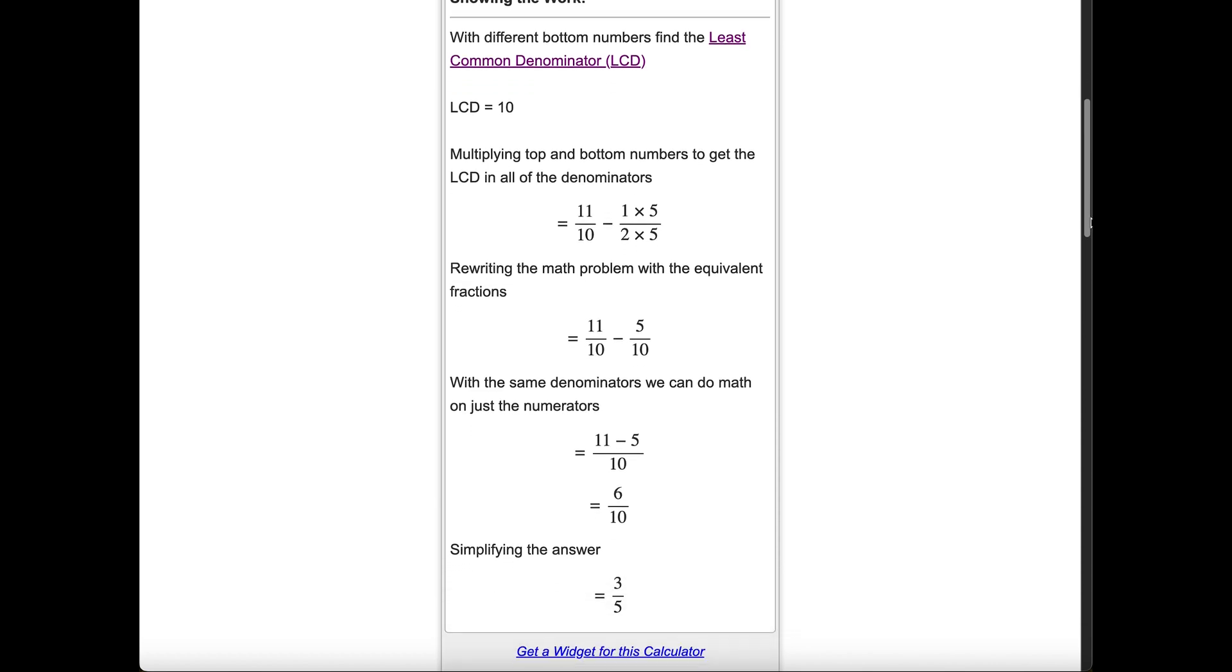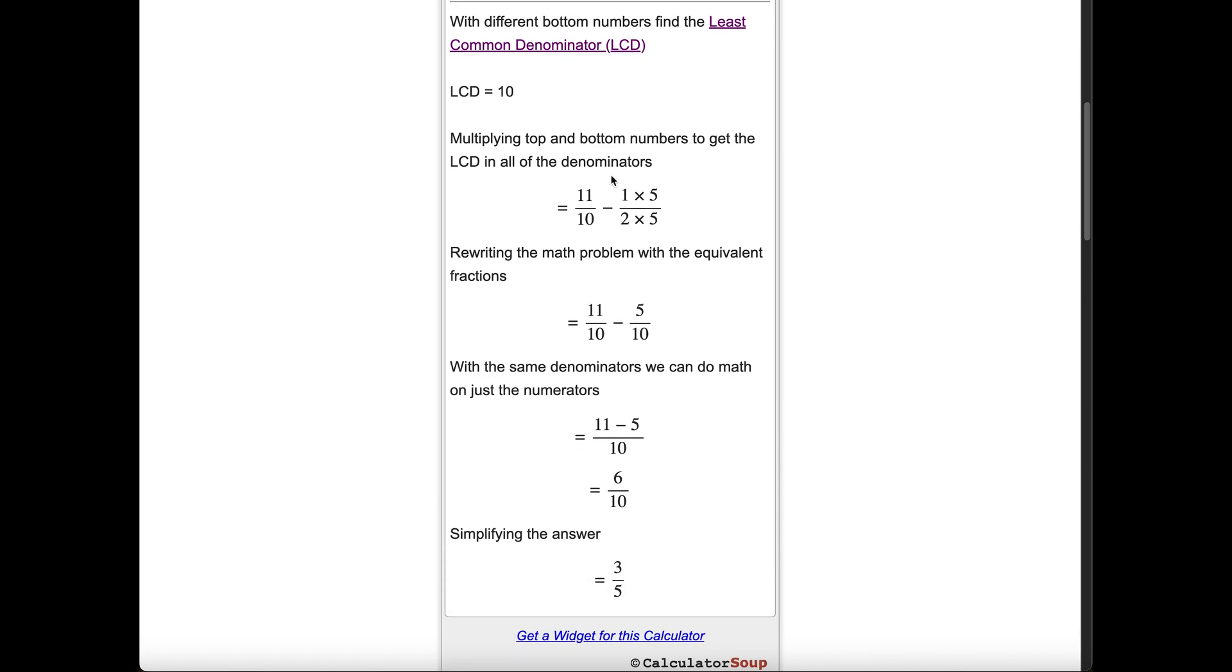The LCD of 10 and 2 is 10, so we only need to find the equivalent fraction of 1 half. We multiply the top and bottom by 5 to get 5 tenths.